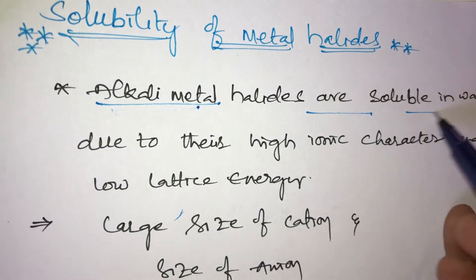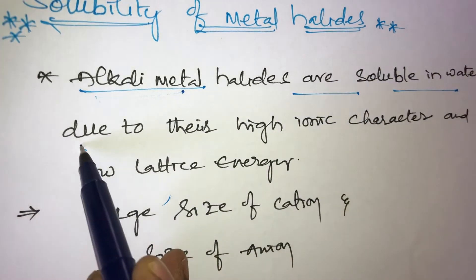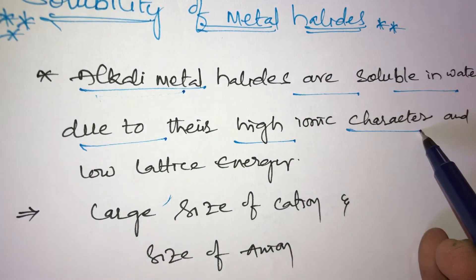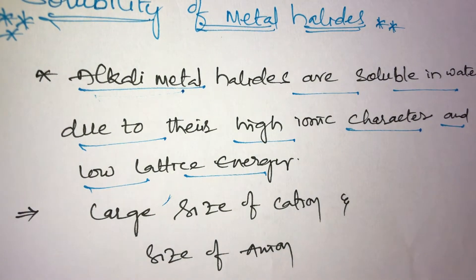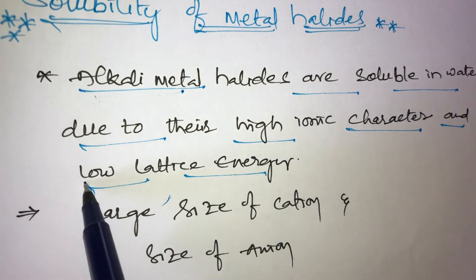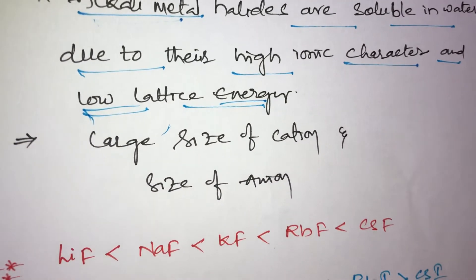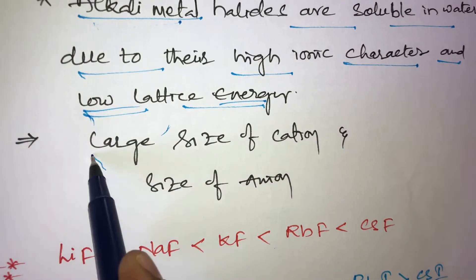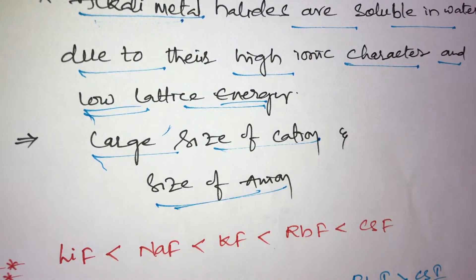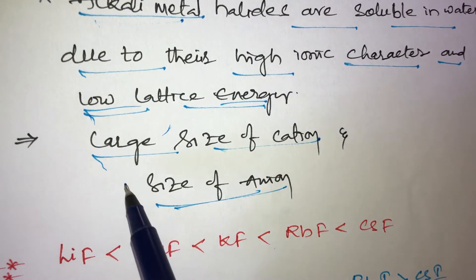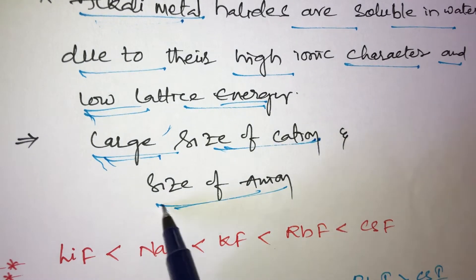Alkali metal halides are soluble in water due to their high ionic character and low lattice energy. Second point: large size of the cation and size of anion also determines solubility. Both large size of cation and anion are important factors.